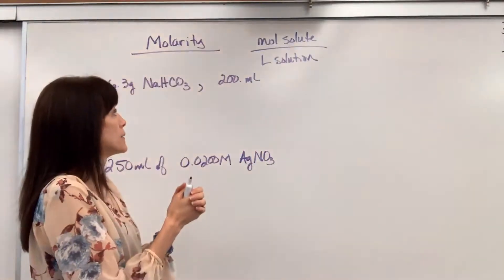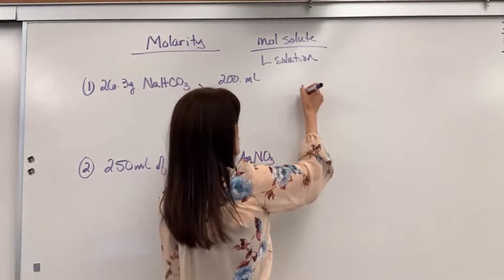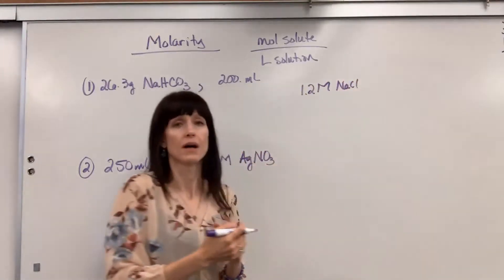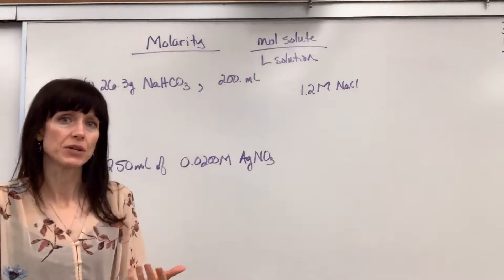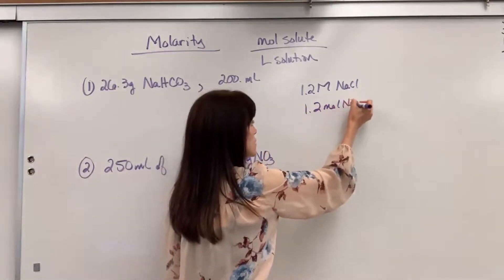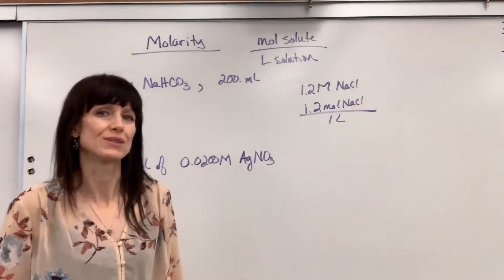Okay, so let's say that you are told that you have a 1.2 molar sodium chloride solution. This is how you read it. That means that you have 1.2 moles of sodium chloride for every one liter of that total solution.